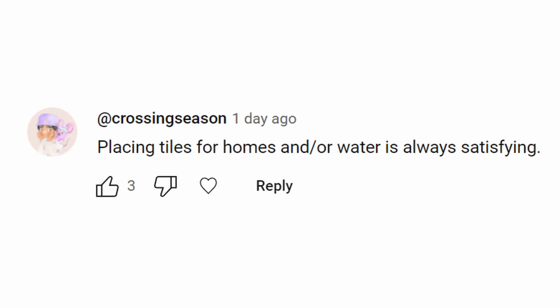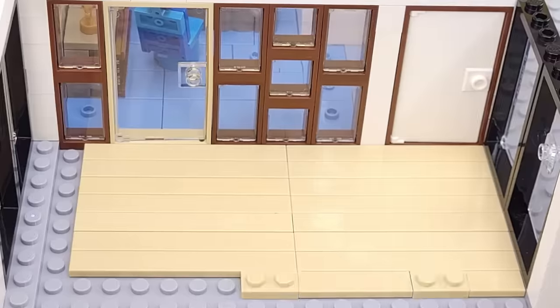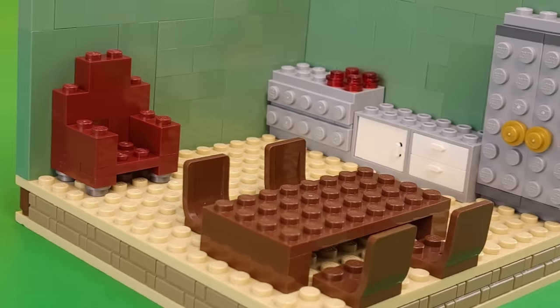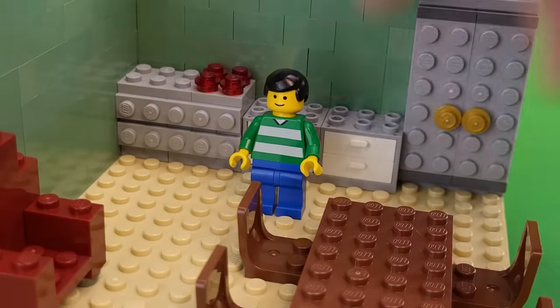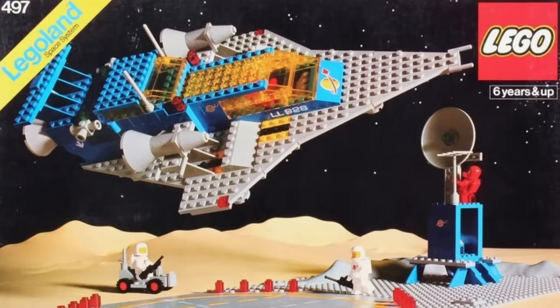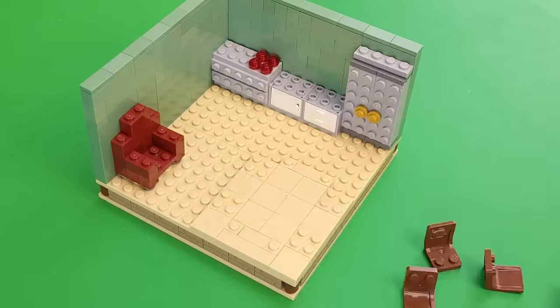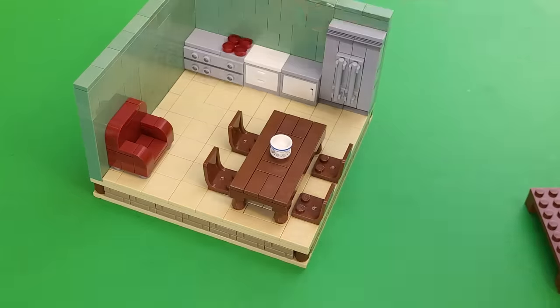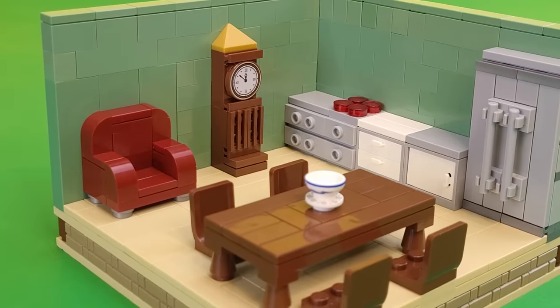This comment said tiling things off to make them smoother, which is an advanced building technique. To prove it, I made this old style of Lego kitchen that is really blocky with a lot of studs showing on all of the furniture and different details, which is how Lego sets used to be designed. But then I remodeled the entire room to make it way smoother. And in my opinion, it looks a lot better this way.